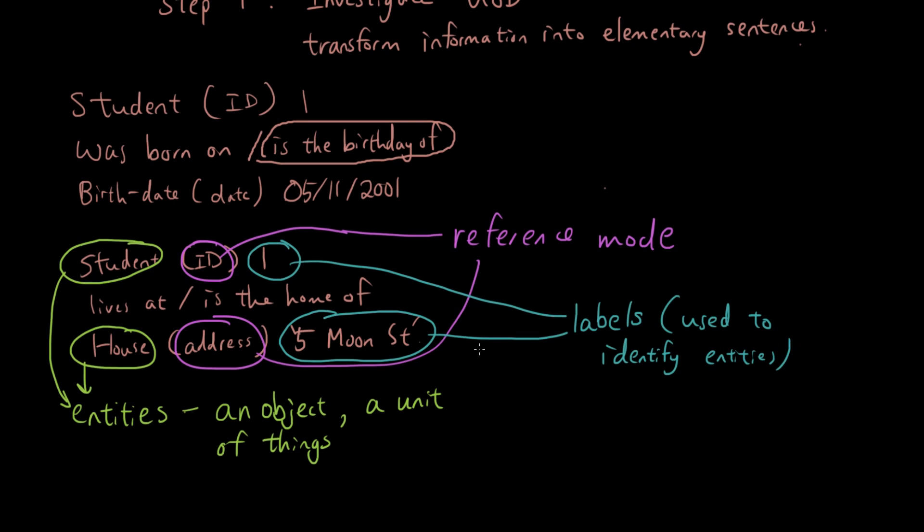Otherwise we've got no way of identifying the different entities. There's so many students - how do we identify each one? Using the labels. What sort of label is it? It's the reference mode, it's the ID of the student. There could be other things you can use to identify the student. What is number 1 for? That is the reference mode ID, it's the ID of the student.